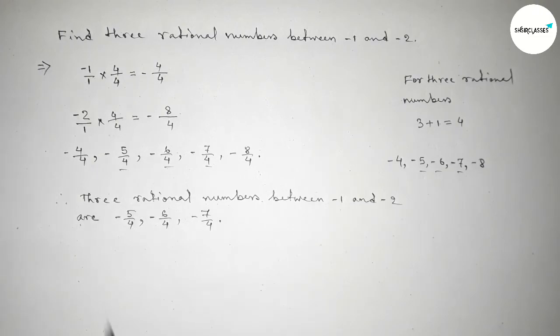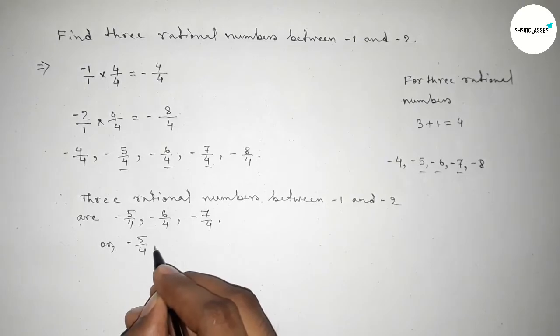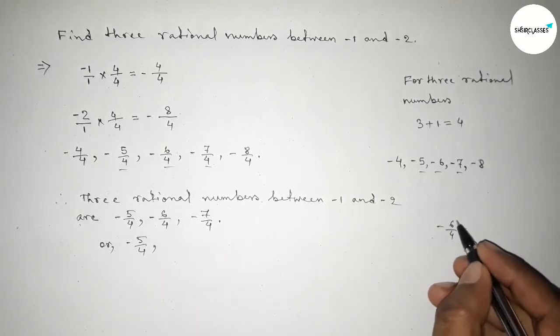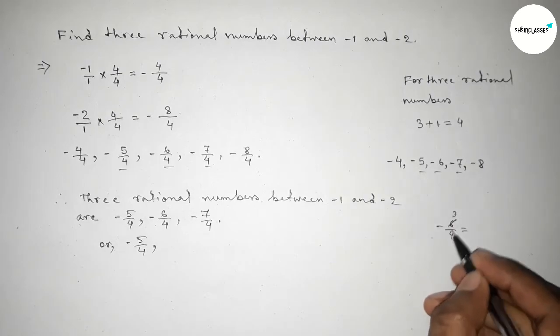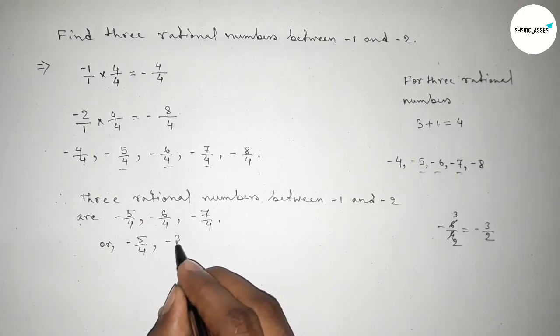Or we can write minus 5 over 4, and minus 6 over 4, if we divide both by 2, becomes minus 3 over 2, and minus 7 over 4.